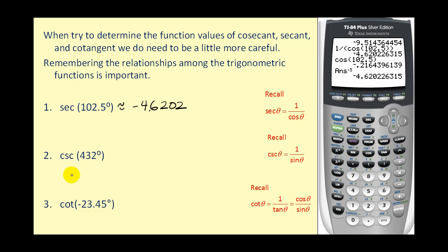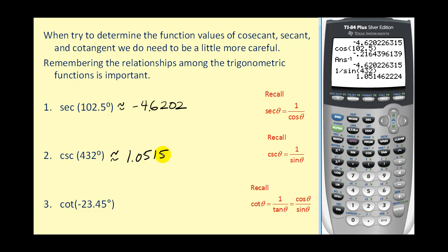If we want to find the cosecant of 432 degrees, and because there's no cosecant key, we'll find one over the sine of this angle. So one divided by the sine of 432 degrees. And we have our approximate value: 1.0515.